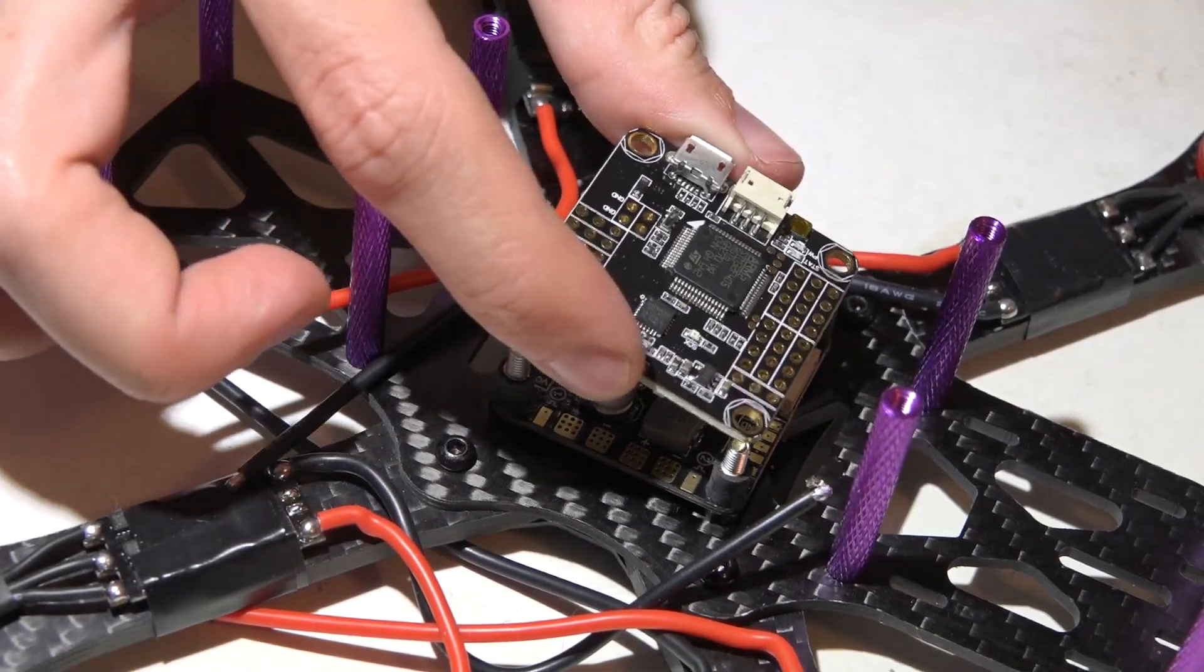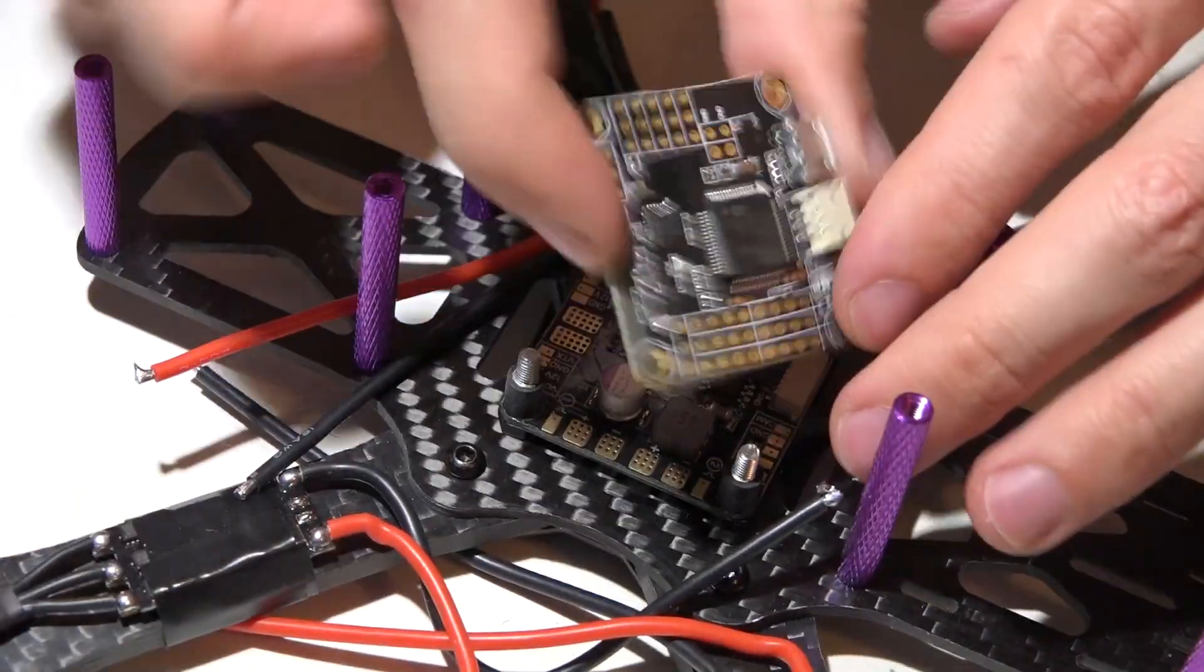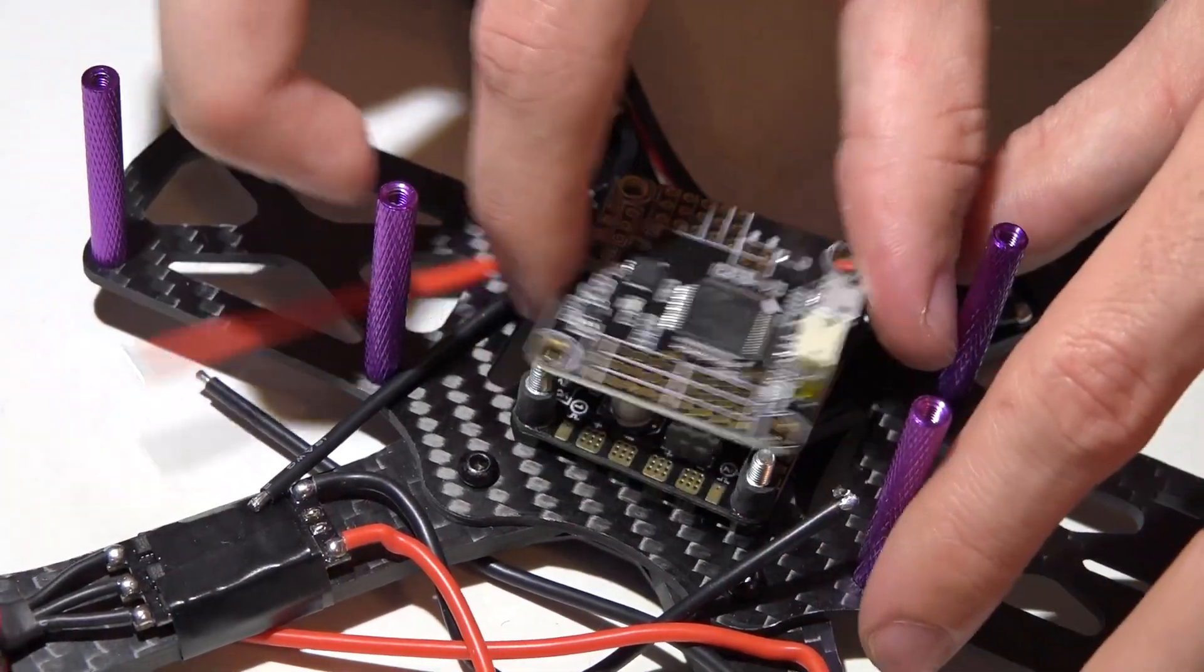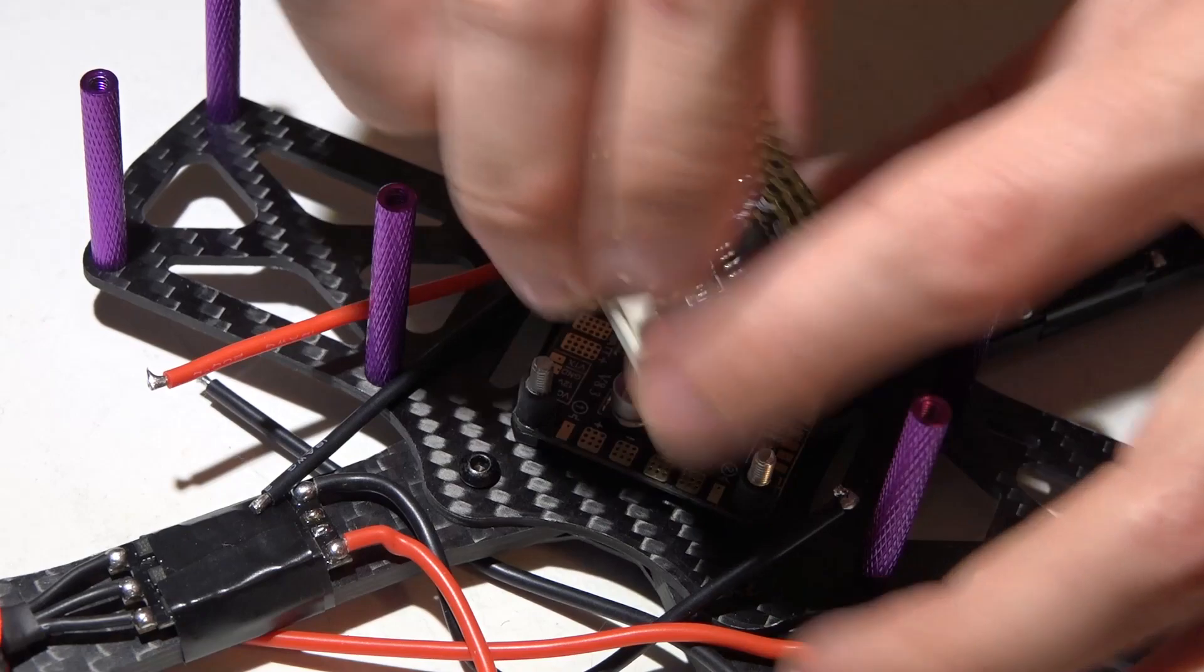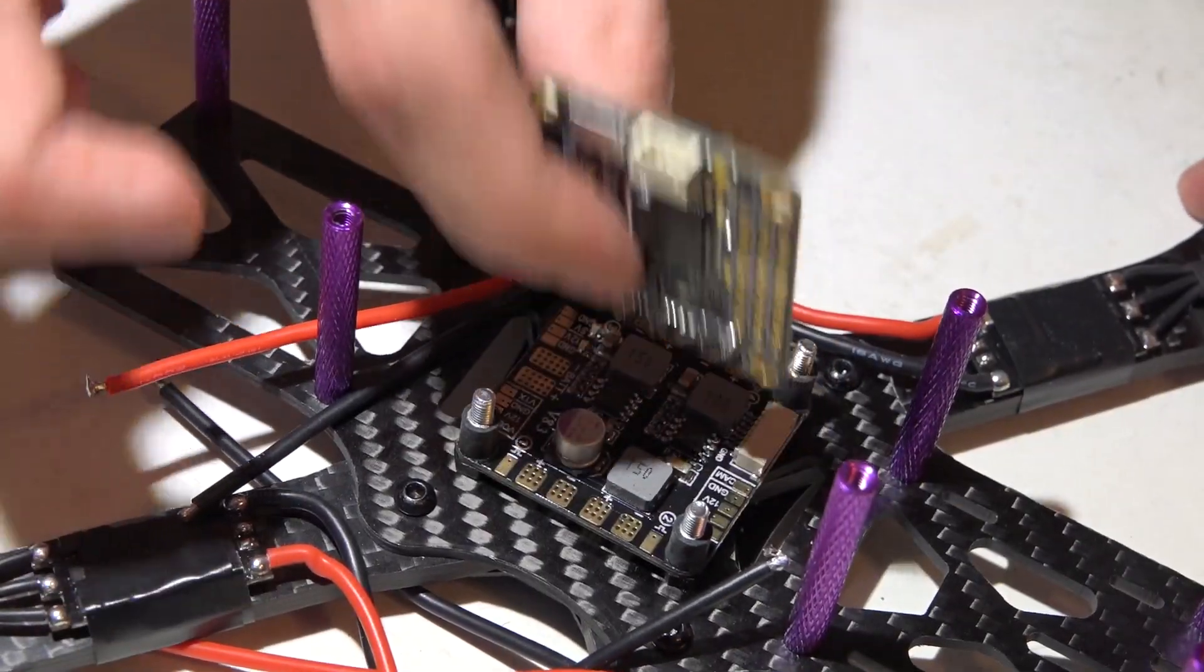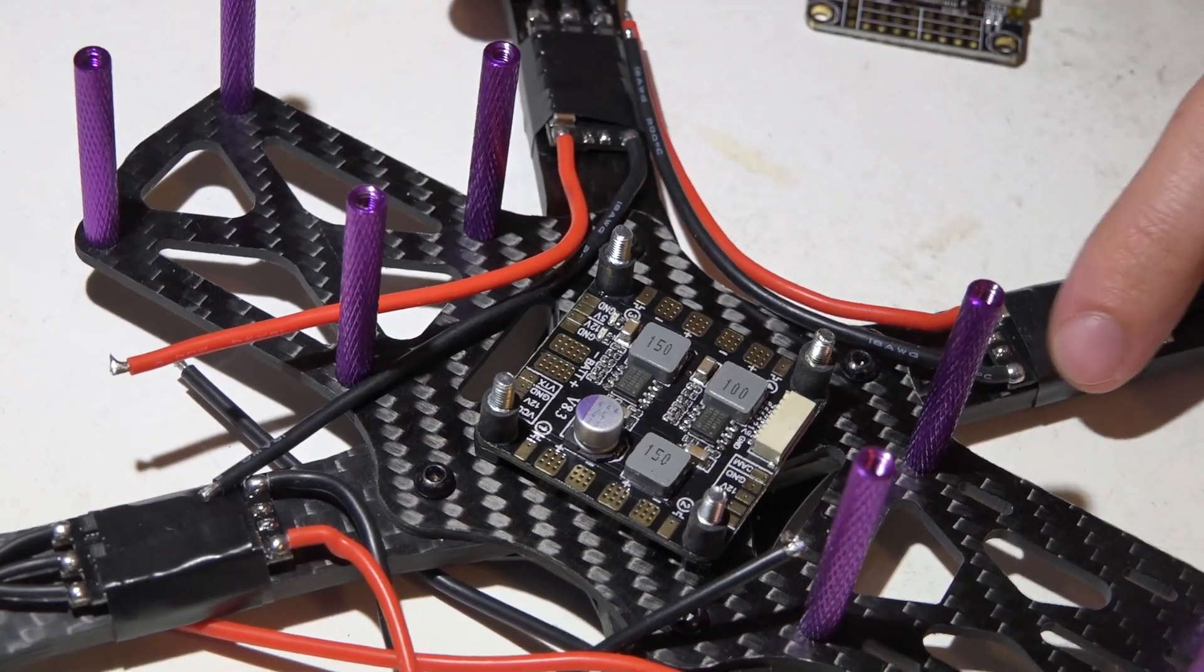The arrow usually points to the front, where the front of the flight controller is by default. But once we go into Betaflight, you can orientate the flight controller any way you want. I mean, you can have it this way. You can turn it this way. You can turn it upside down and backwards. You can even have it mounted up and down like this if you wanted to. It really does not matter. So completely ignore that arrow.